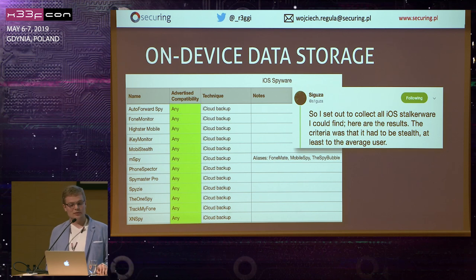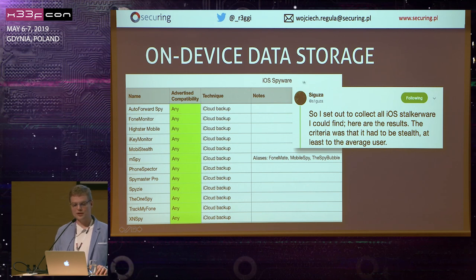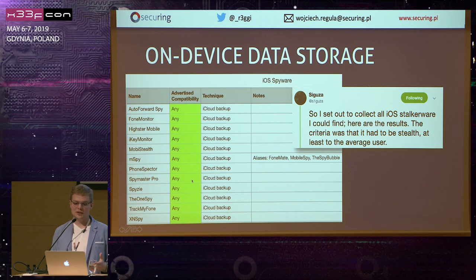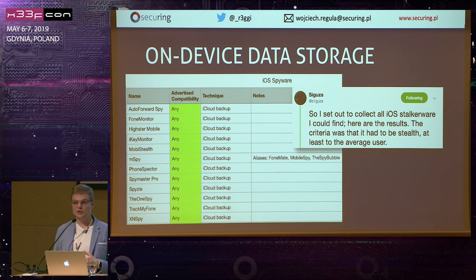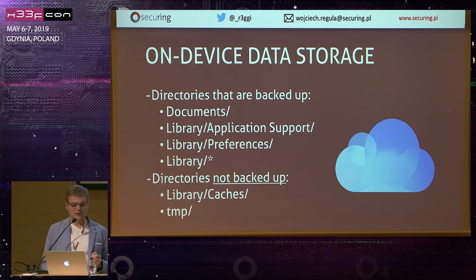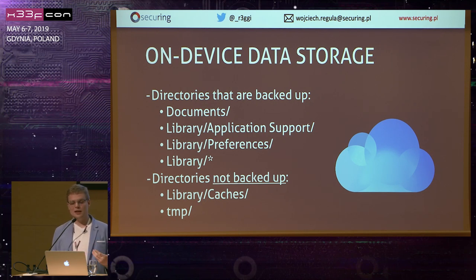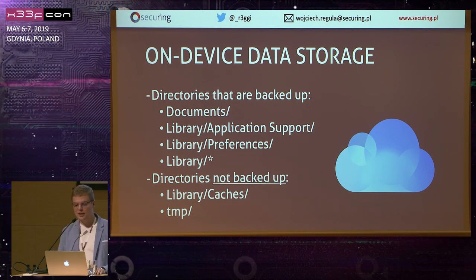Siguza, the famous iOS security researcher, shared research summarizing iOS spyware, and as you can see there are many kinds of spyware that retrieve user data from iCloud backups. So we need to know which data from iOS applications are actually backed up. The directories that are backed up include: Documents, Library/Application Support, Library/Preferences, and any other directories in Library — except Caches and Temporary, which are not backed up.